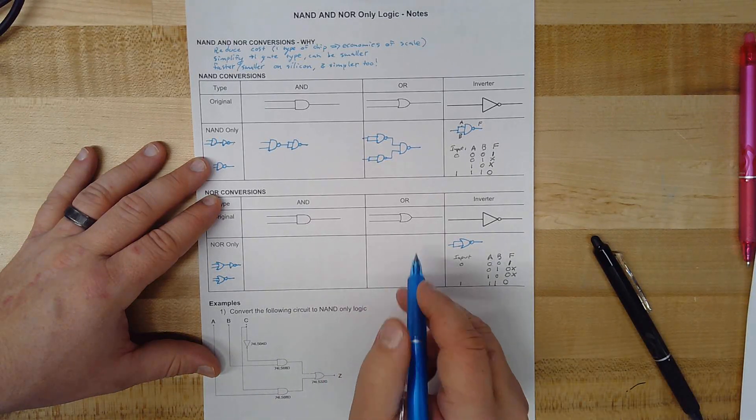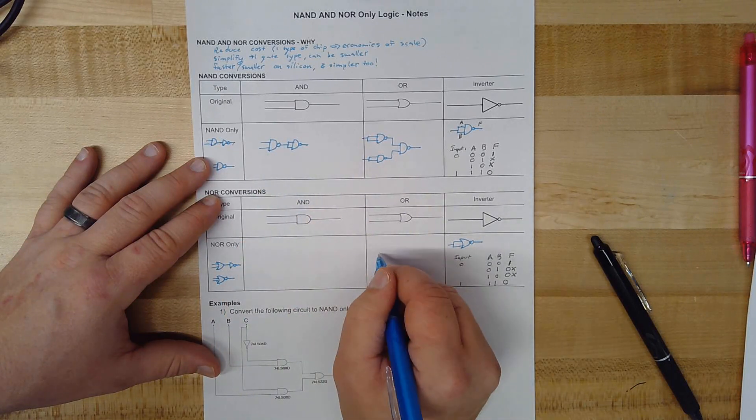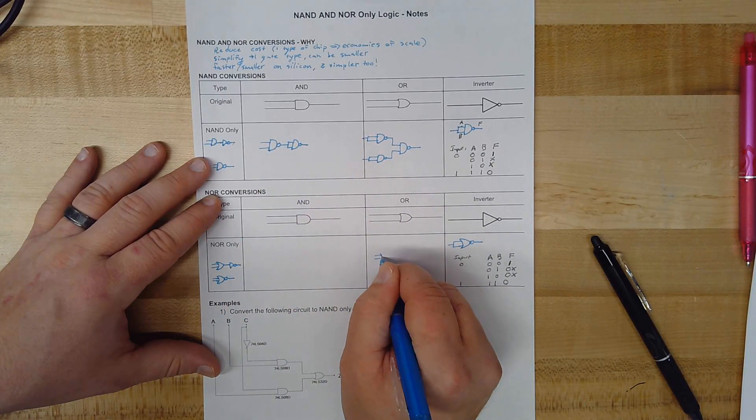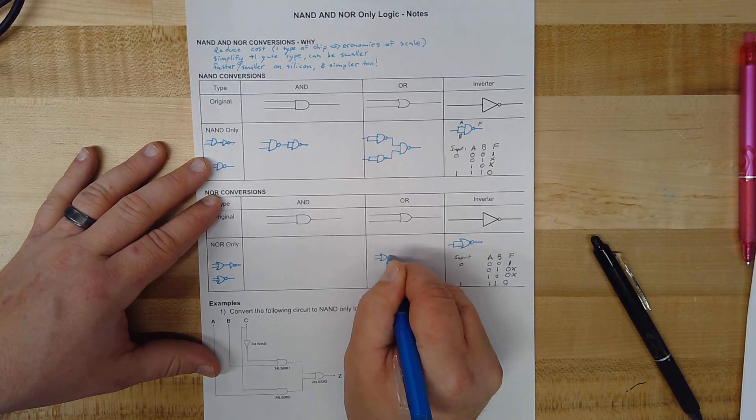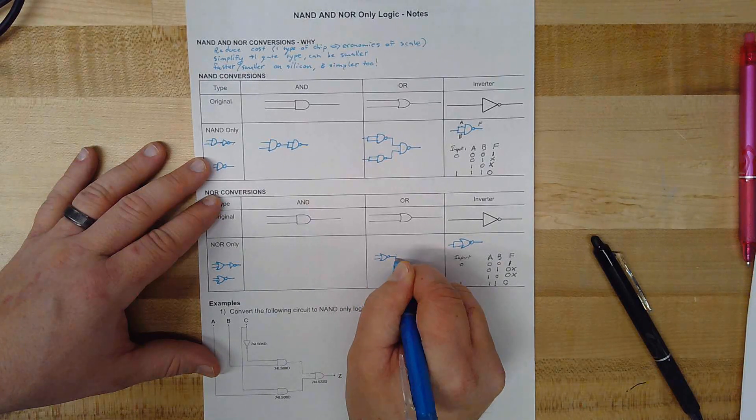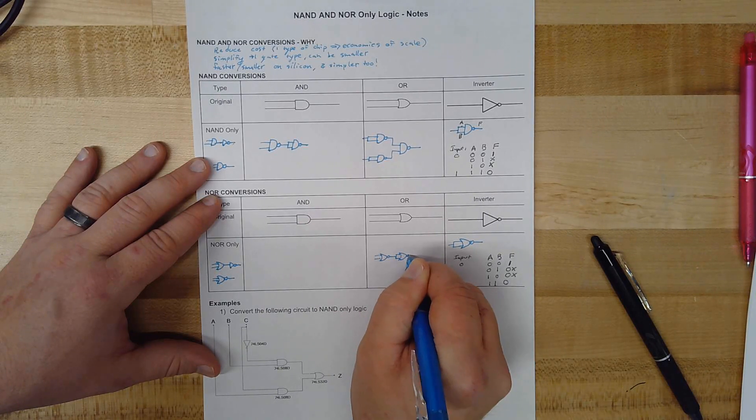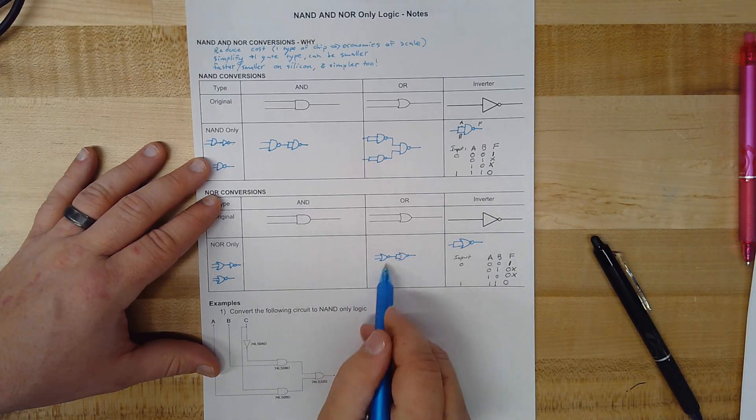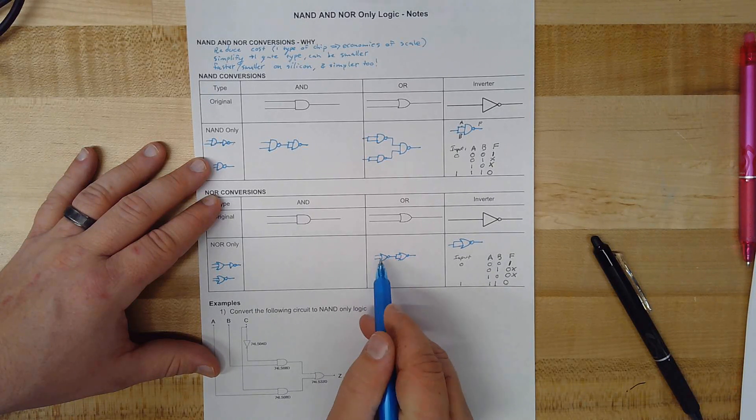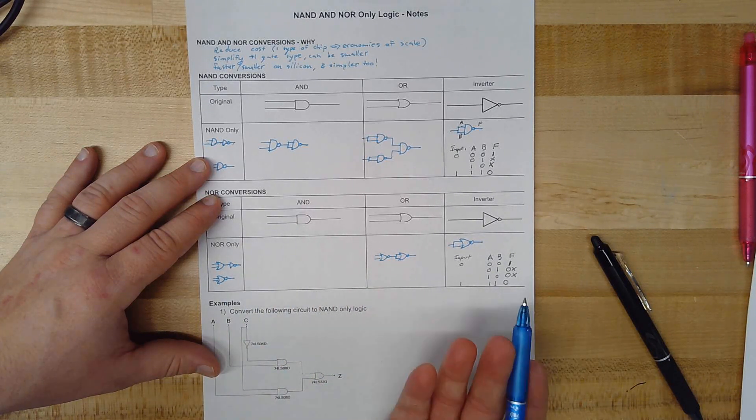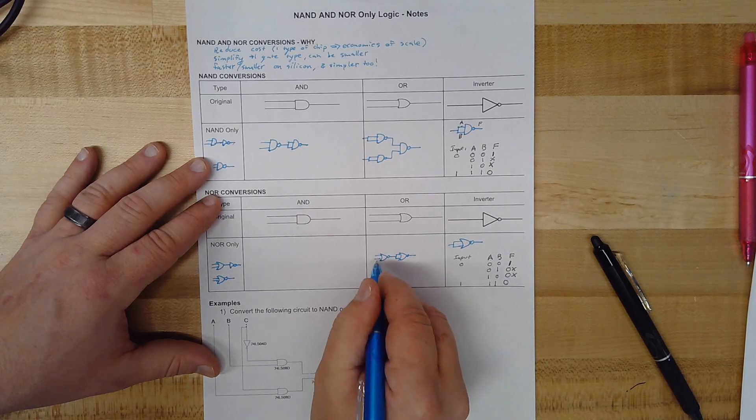We'll use that same principle we used with the NAND gate. To build an OR gate, we'll take a NOR gate, and we'll wire an inverter up onto the end of it. A NOR gate inverted, we'll remove the inverter right here, through the double inversion, and just give us an OR gate again.